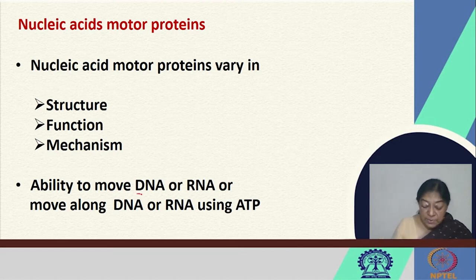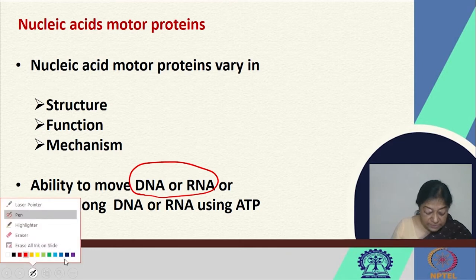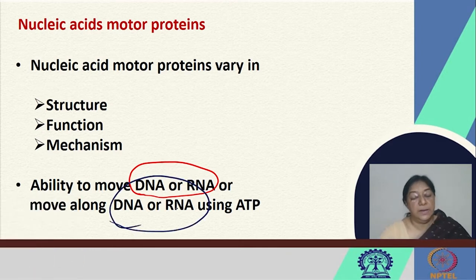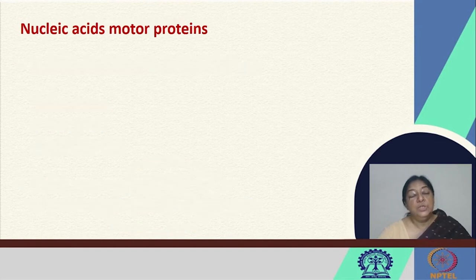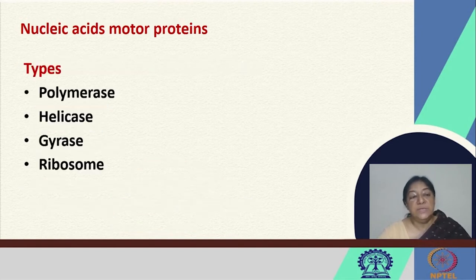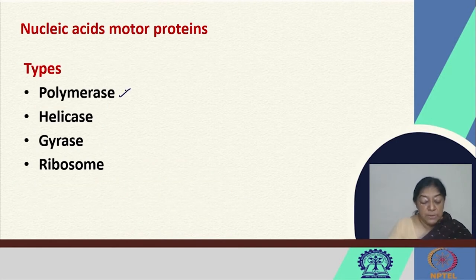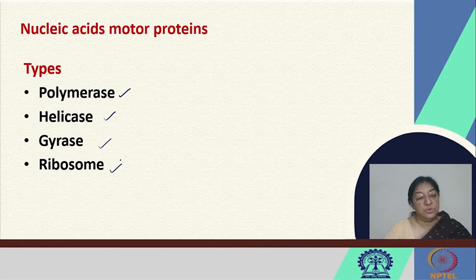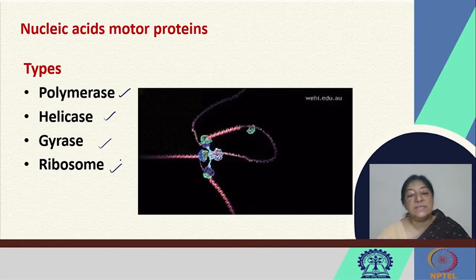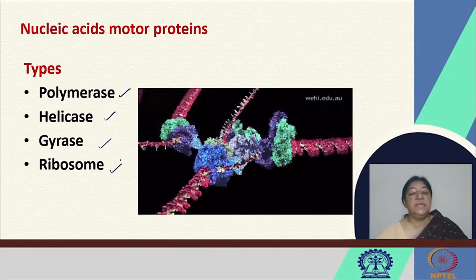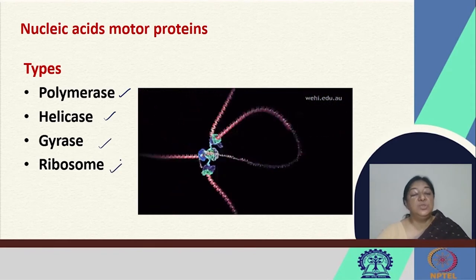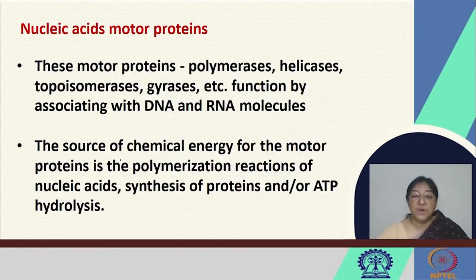Either they will be moving DNA or RNA, or they themselves will move along DNA or RNA. The nucleic acid motor proteins are of different types: polymerase, helicase, gyrase, and ribosomes. We will look at each of these types and see what they can do and how they function.